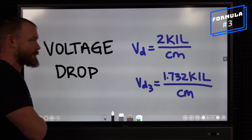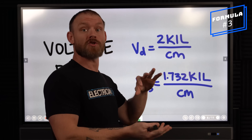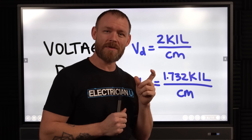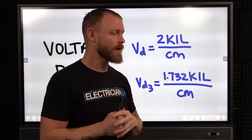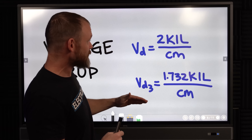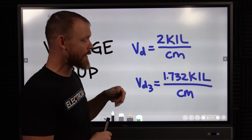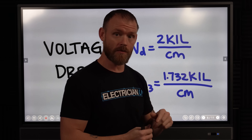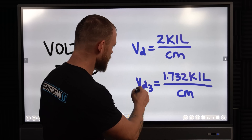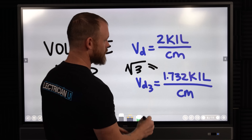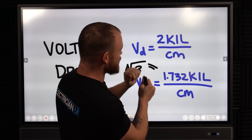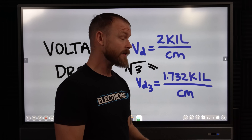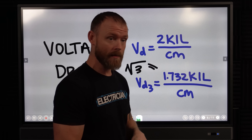Next up is voltage drop, which we'll frequently encounter in the field. You can use Ohm's Law for a rough voltage drop calculation, but it's not very accurate. A better approach is to use the dedicated voltage drop formulas. I have two here: VD for single phase and VD3 for three phase. Any time you do three phase, you have to introduce 1.732 — the square root of three — into the formula. The formulas are very similar; the three-phase one multiplies by 1.732 instead of 2.